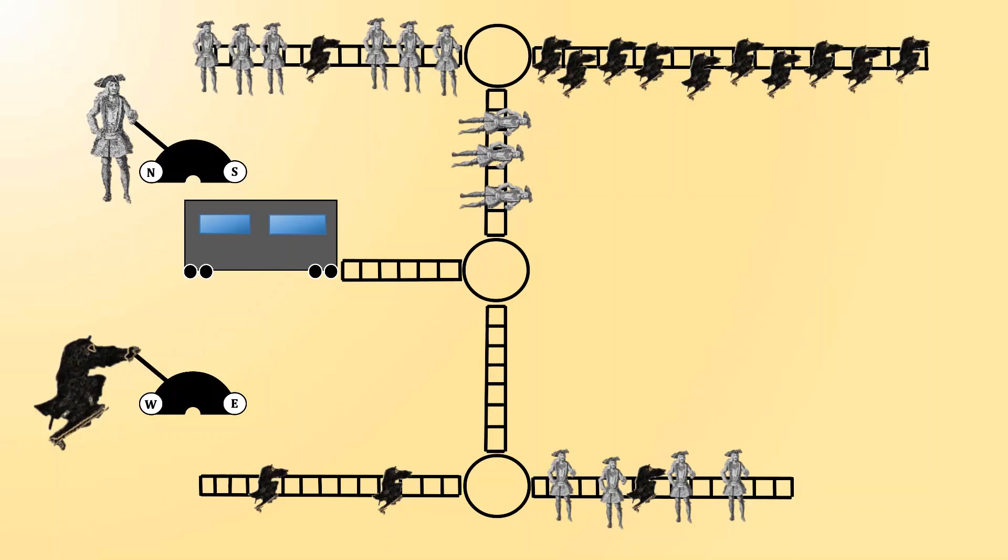Which means at the first junction, the pirate will choose whether the trolley goes north or south, and similarly the ninja will control the other two junctions, determining whether the trolley goes west or east.